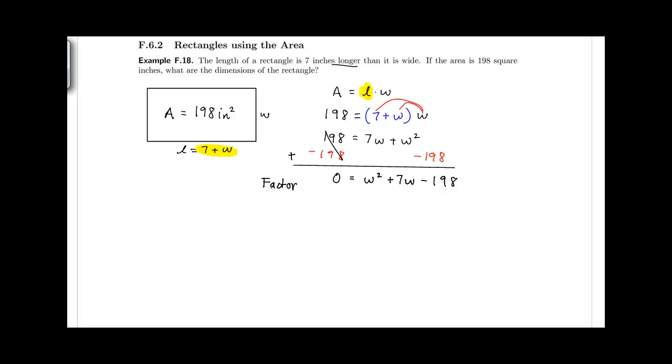At this point, I can see that I need to factor to solve. So I would get 0 equal to a product of two binomials. Two factors of 198 that add up to be 7 is 11 and 18. So W plus 18 and W minus 11. Using the 0 product property, we get W plus 18 equal to 0 or W minus 11 equal to 0.